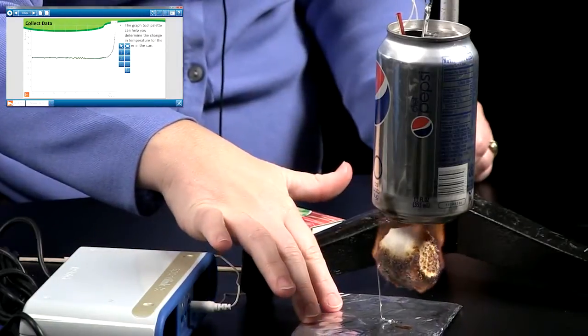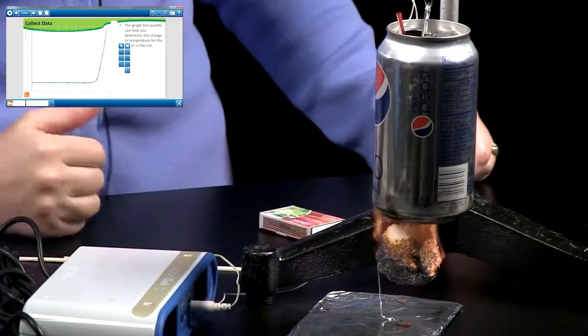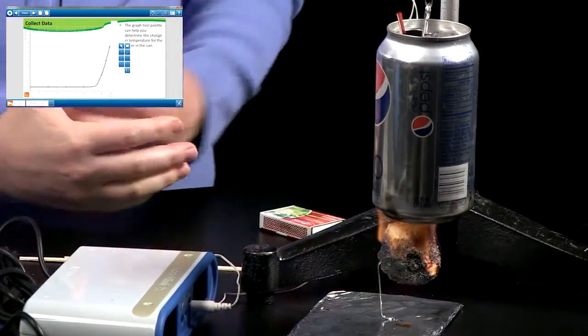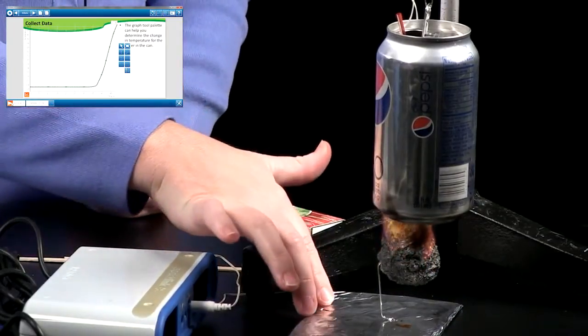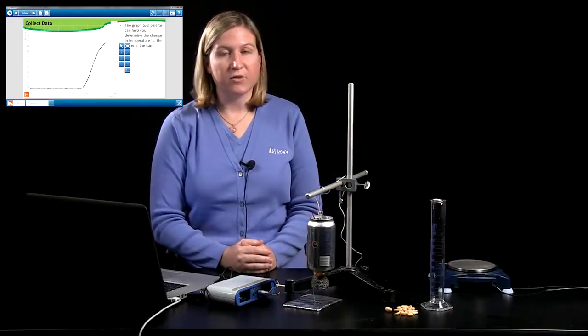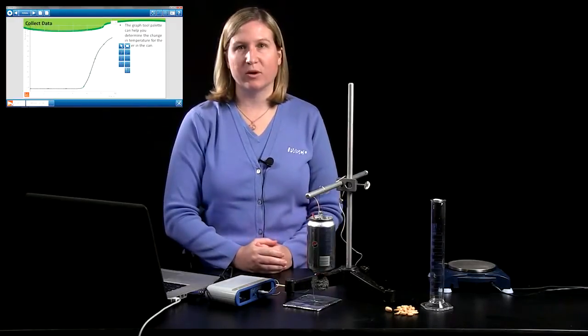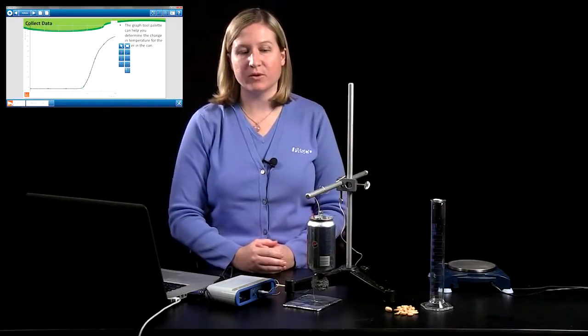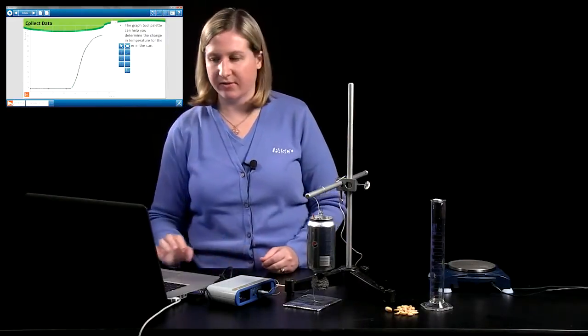As soon as the food is burning on its own, you want to remove the splint. You can always adjust the placement of the food a little bit by moving the holder. You want to keep it as directly underneath the can as possible.